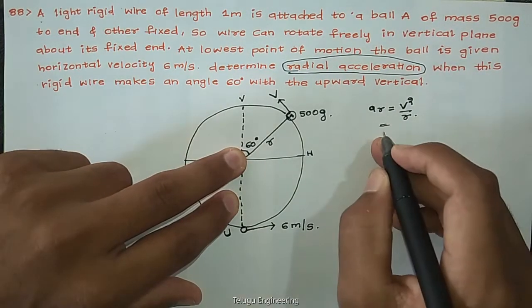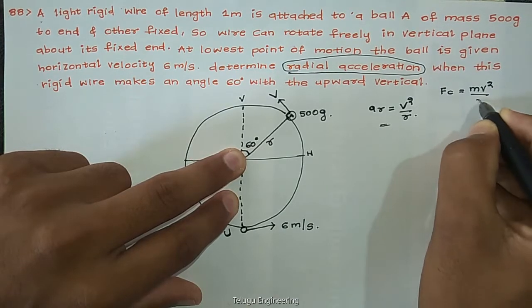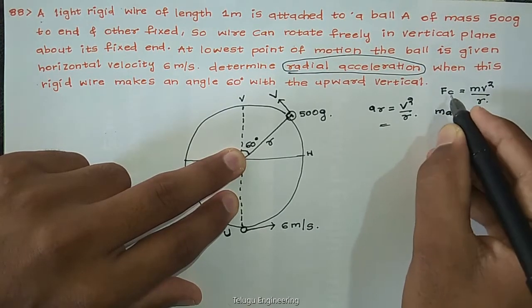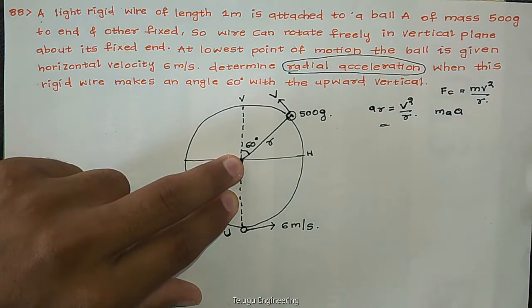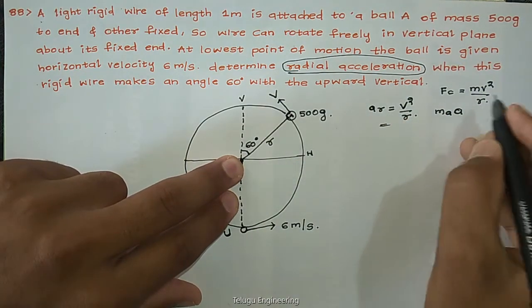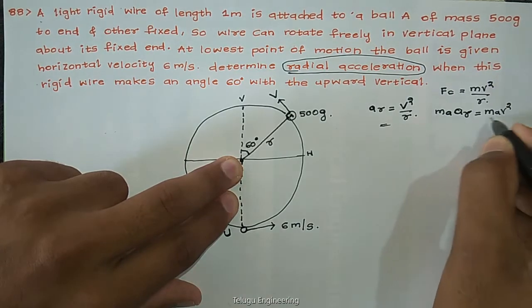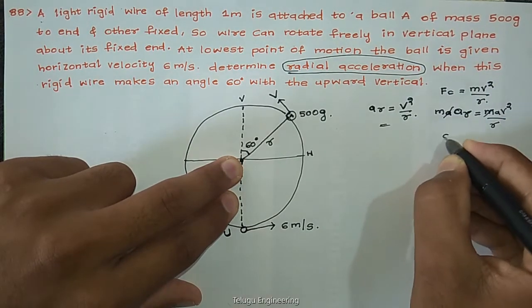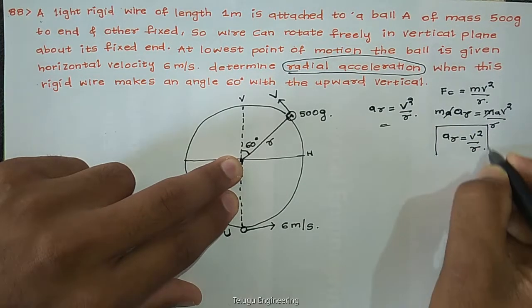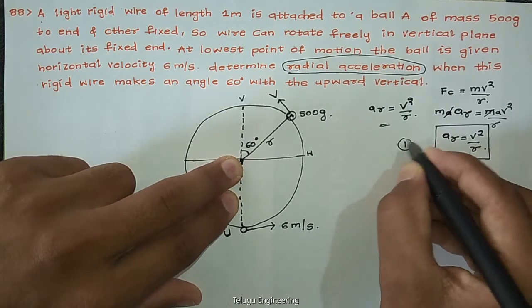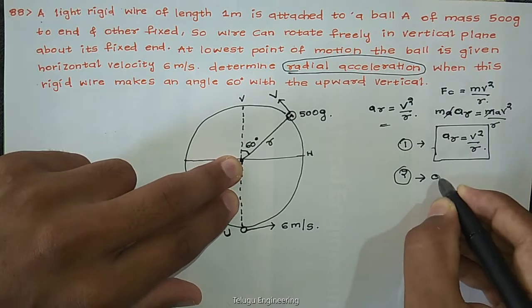We know that centripetal force equals mv squared by r, and this equals mass into acceleration. Since this is centripetal force directed always inside the circular path, ar equals mv squared by r. Cancelling m on both sides gives ar equals v squared by r. This is the radial acceleration, which is the first type. The second type is tangential acceleration, at.